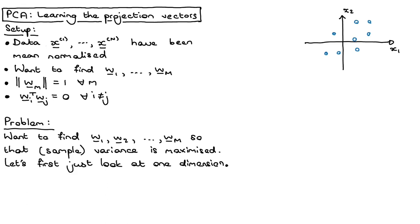The problem is basically that we want to find these capital M projection vectors so that we keep as much information as possible from the original data. In an earlier video we looked at different views of PCA, and one view is that PCA tries to find the projections that retain as much of the variance of the original data as possible. Let's take that view and see how we find the first projection vector, using the example of going from two dimensions down to one.